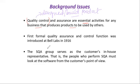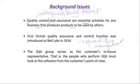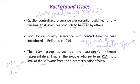The first quality assurance and control function was introduced at Bell Labs in 1916, after which it spread rapidly throughout the entire manufacturing world. The SQA group serves as the customer's in-house representative — meaning those who perform SQA must look at the software from the customer's point of view, viewing themselves as the one who is going to use the software rather than just the one designing it.